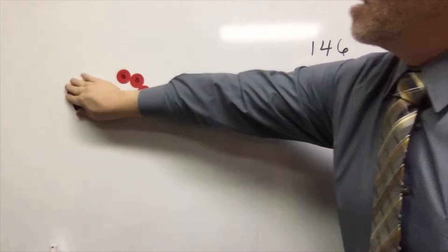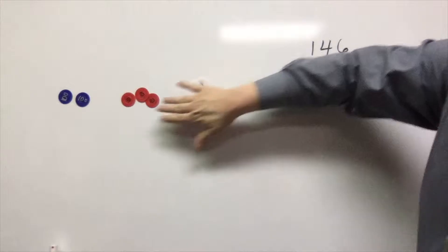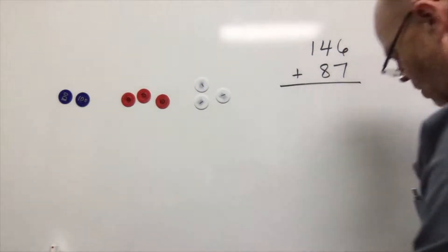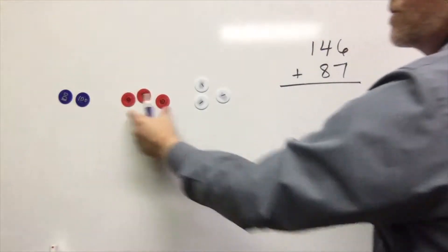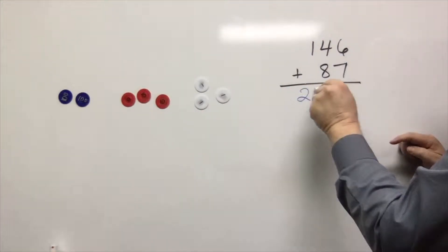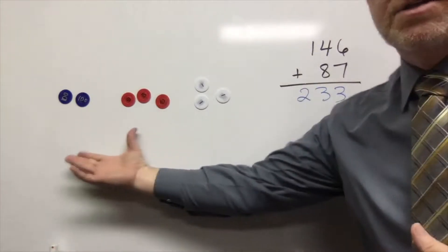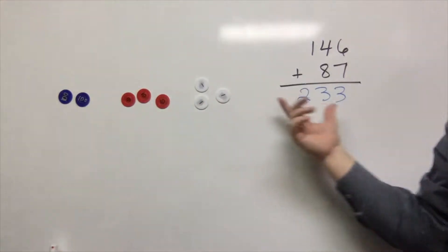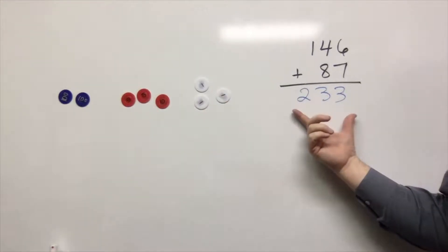So I can see that we end up with two hundreds, three tens, and three ones. So over here, initially, I'm just going to record the answer, 233. And we're going to get our kiddos to be practicing just going from the concrete and then recording their answer over here, from the concrete to recording over there.